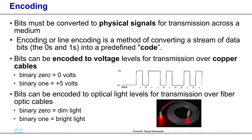Encoding. Bits must be converted to physical signals for transmission across a medium. Encoding, or line encoding, is a method of converting a stream of data into bits — such as zeros and ones — in a predefined code. Bits can be encoded to voltage levels for transmission over copper cable. For example, binary zeros can be represented with a voltage of zero, while binary ones can be plus five volts. Based on how long that voltage remains at plus five and how long it remains at zero, we define the bits of zeros and ones.